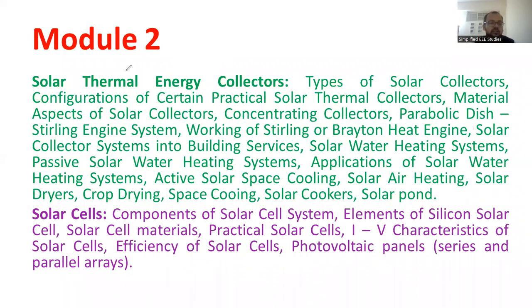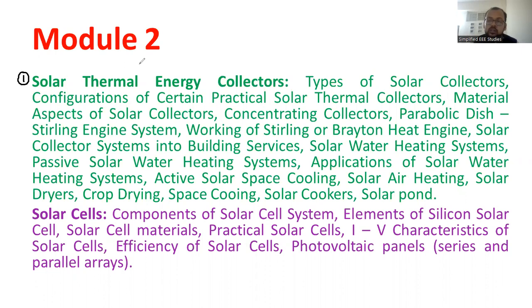Moving ahead, the second module comprises two important segments. The first segment is solar thermal energy collectors — basically solar thermal application. We are going to discuss various types of collectors and how we are going to use solar collectors to convert solar energy into useful heat. Also, we are going to learn some mechanical cycles, especially the Brayton cycle. Moreover, the solar air conditioning system, solar water heating application, solar cooker, etc. — how it is possible to extract solar energy into useful heat.